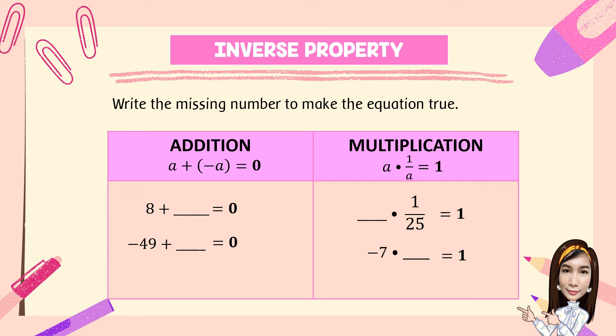Now let's try this one. Write the missing number to make the equation true. Using the additive inverse property: 8 plus blank is equal to 0 — the answer is negative 8, the opposite of positive 8. Then negative 49 plus blank is equal to 0 — the opposite of negative 49 is positive 49. For multiplication, using multiplicative inverse property: blank times 1 over 25 is equal to 1 — the multiplicative inverse of 1 over 25 is 25, so 25 divided by 25 equals 1. And negative 7 times the multiplicative inverse is negative 1 over 7, and the result is 1.